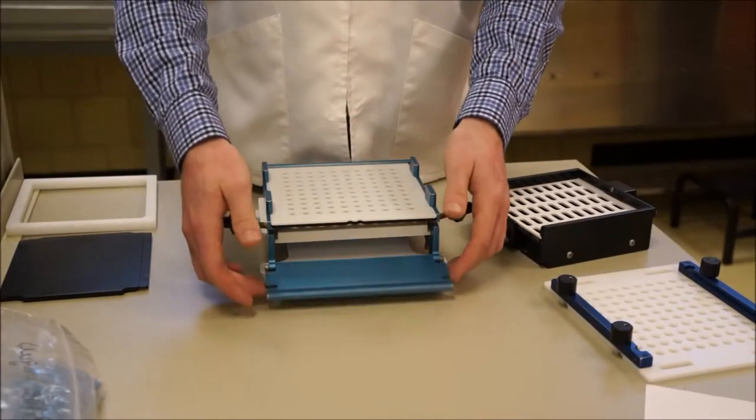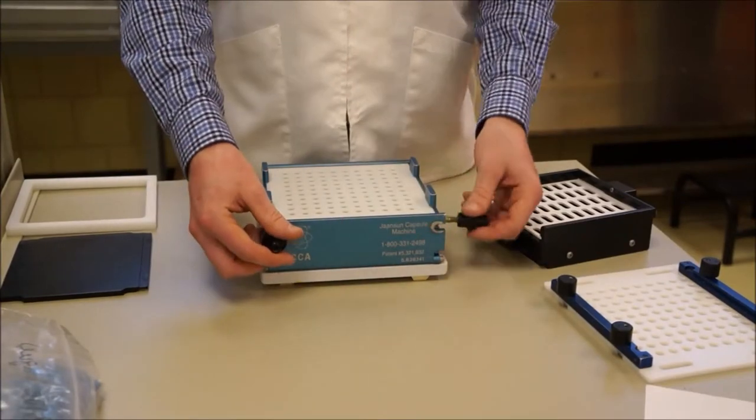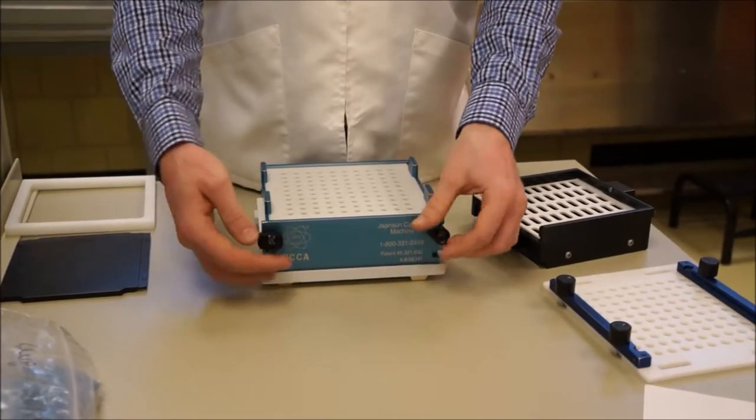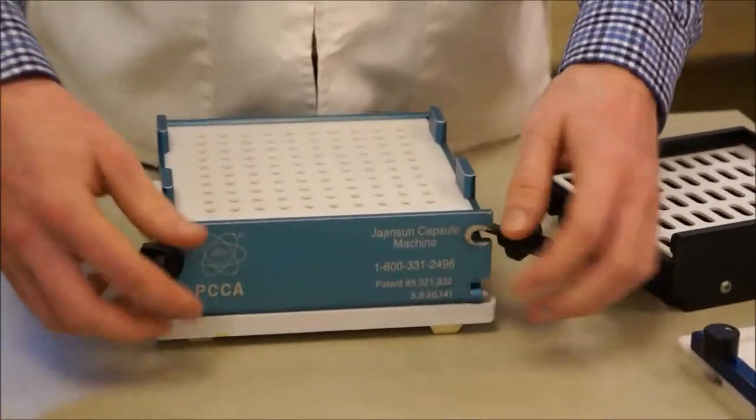Okay, so this is the capsule machine. There are a few parts I'm going to explain. This is the front door. As you can see, there are these two knobs that swing around and screw in to lock it in.